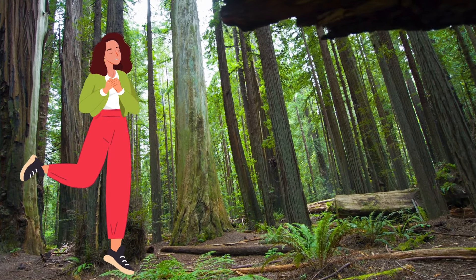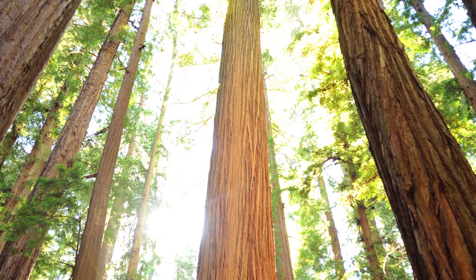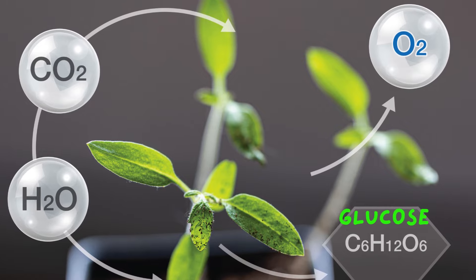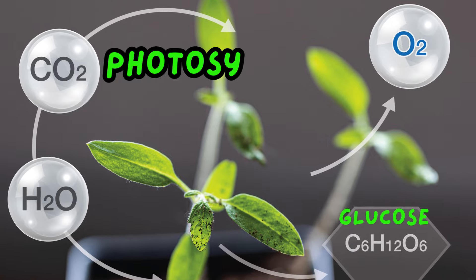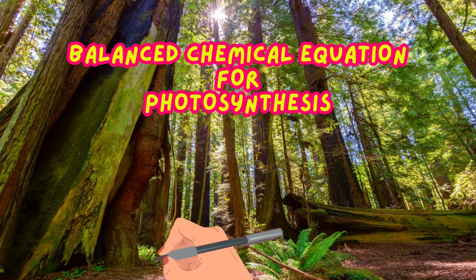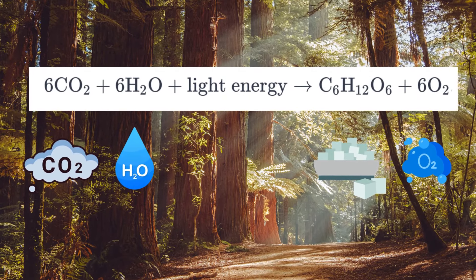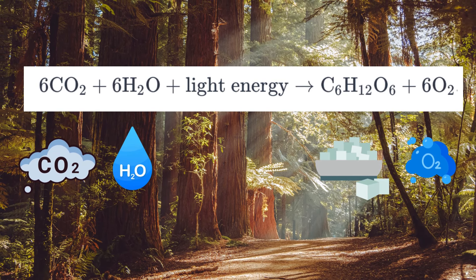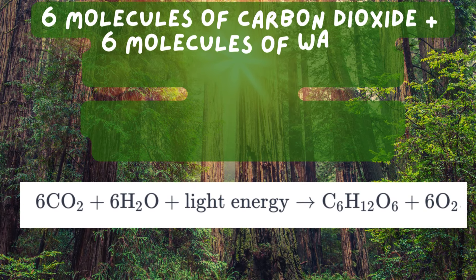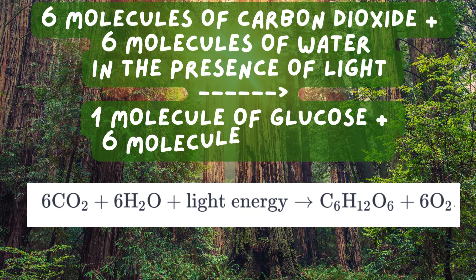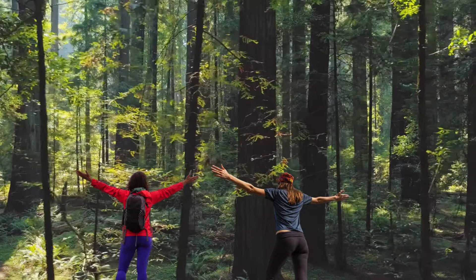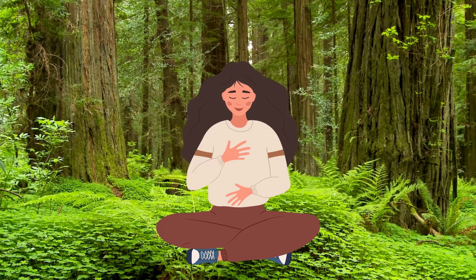Oxygen quietly said, 'In the presence of sunlight, all these trees and plants absorb carbon dioxide and water, make glucose for their energy, and release oxygen during a process called photosynthesis.' Then, using a small wooden twig, she started writing the balanced chemical equation for photosynthesis on the ground: 6CO2 + 6H2O + light energy → C6H12O6 + 6O2. Oxygen explained, 'Six molecules of carbon dioxide and six molecules of water combine in the presence of light to form one molecule of glucose and six molecules of oxygen. No wonder the air here is so clean and refreshing.'